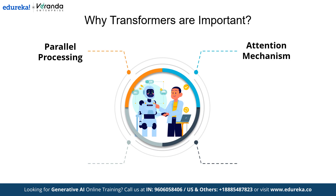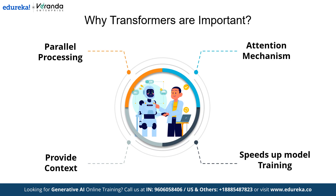Furthermore, transformers excel at providing context, ensuring that the meaning of each word or token is accurately interpreted within its surroundings. Lastly, these models dramatically speed up the training process, making them faster and more efficient compared to traditional neural networks, thus redefining AI's capabilities across diverse applications.